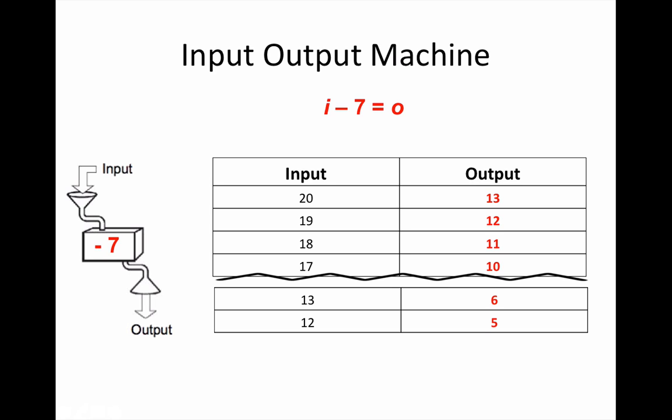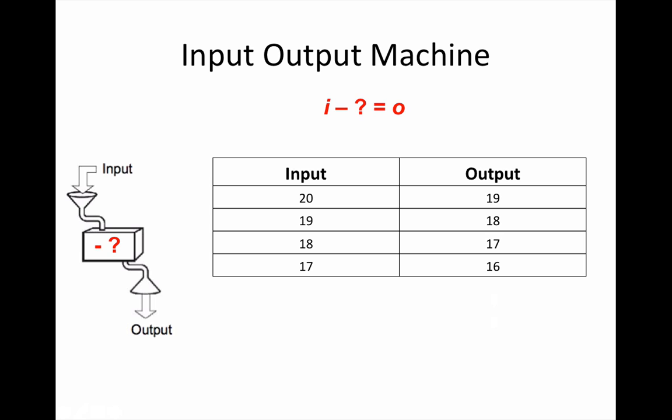Check your answers. This input output table is missing the formula. Can you write a formula or expression for this table? It is a subtraction machine. How much is being taken away from the input each time to get to the output number?